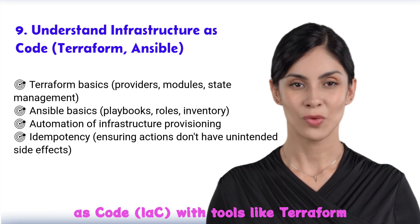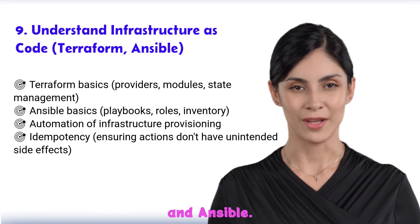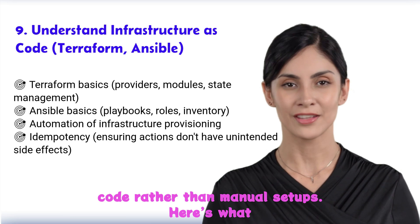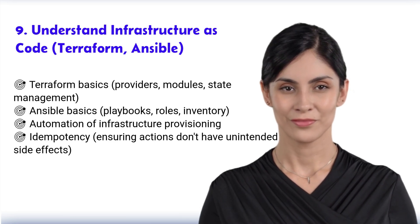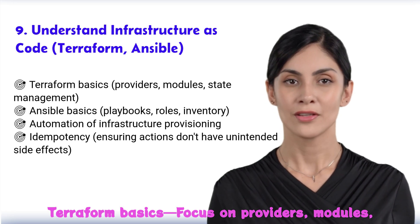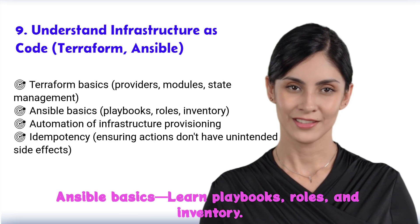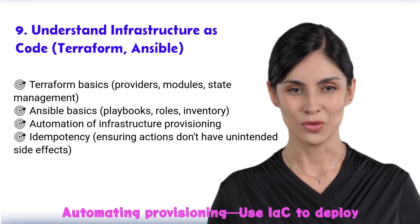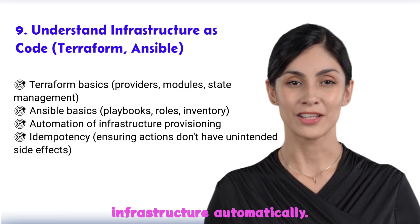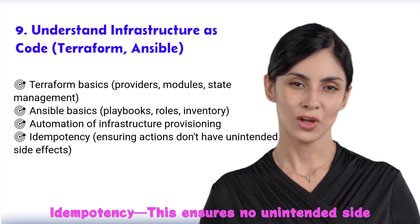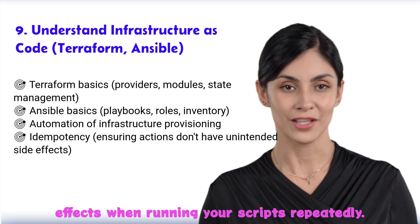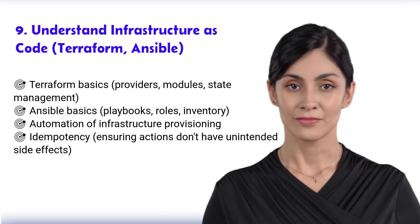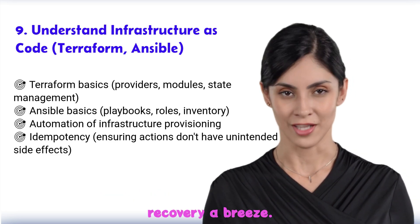Step 9: infrastructure as code, or IaC, with tools like Terraform and Ansible. IaC allows you to manage infrastructure with code rather than manual setups. For Terraform, focus on providers, modules, and state management. For Ansible, learn playbooks, roles, and inventory. Use IaC to automate infrastructure provisioning, and understand idempotency — ensuring no unintended side effects when running your scripts repeatedly. IaC ensures your infrastructure is consistent and scalable, making deployments more efficient and disaster recovery easier.